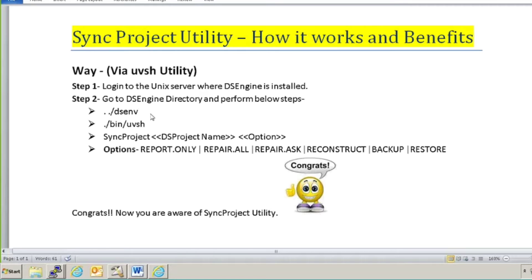Step one is log into the Unix server via the DS engine installed. Step two is go to the DS engine directory and perform the below steps: first, sourcing the DS environment file. If you want to know what is the DS environment file, check out my other tutorial which explains what is odbc.ini, what is dsnv file, and what is your host file. Once you source it, all variables present in the dsnv file will be taken ahead. The second command is dot slash bin uvsh — this will take us into uvsh, the DataStage command language format.